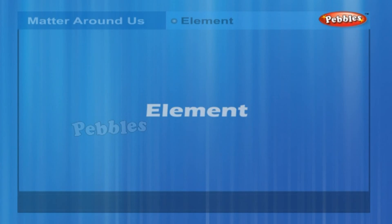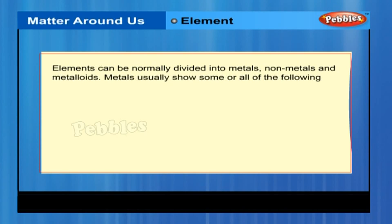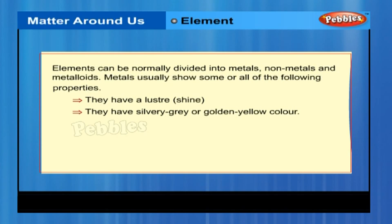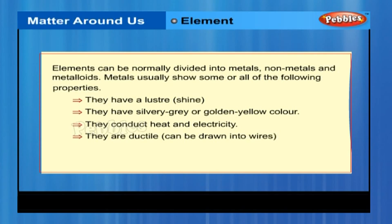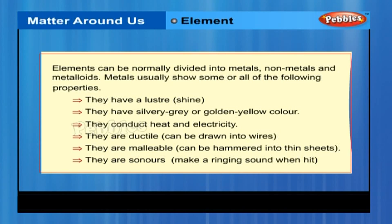Elements can be normally divided into metals, non-metals, and metalloids. Metals usually show some or all of the following properties: they have luster and shine, a silvery-gray or golden-yellow color, and they conduct heat and electricity. They are ductile — that is, can be drawn into wires — and malleable, meaning they can be hammered into thin sheets. They are also sonorous, making a ringing sound when hit.